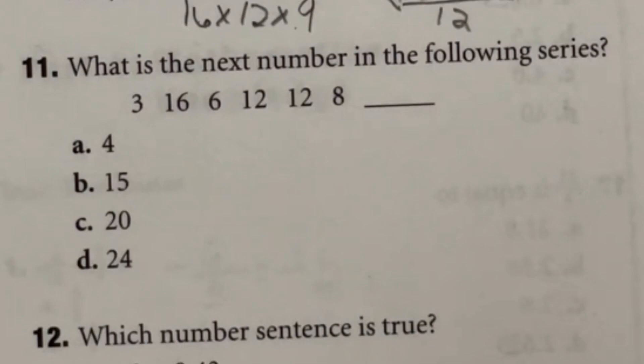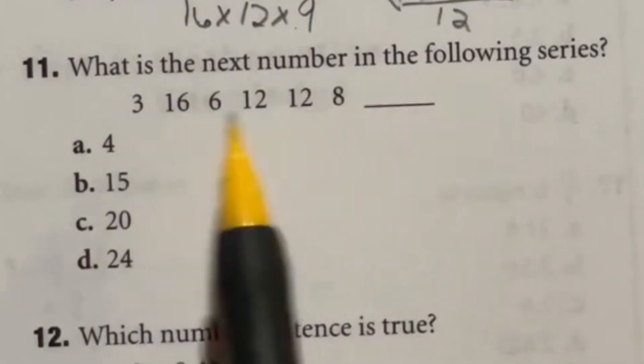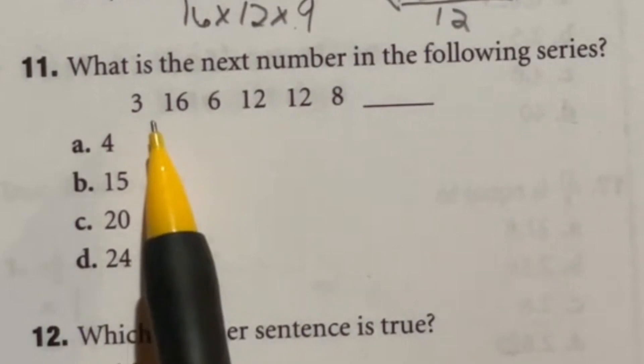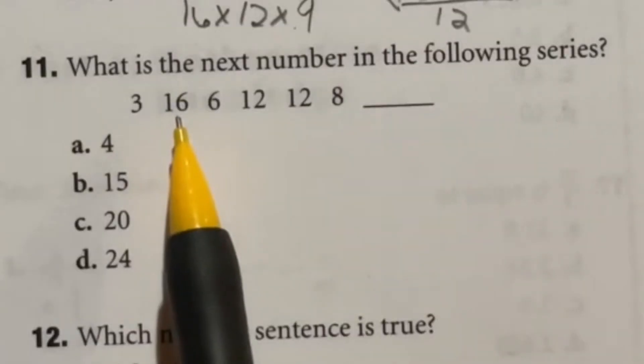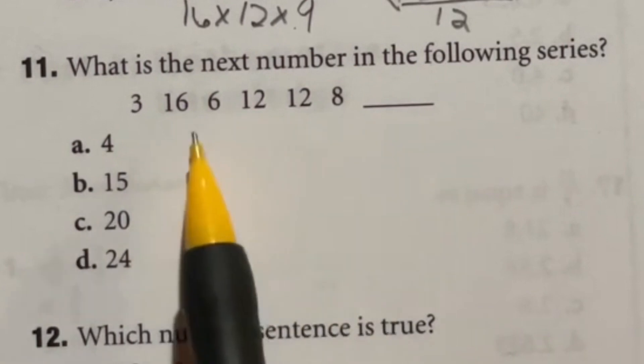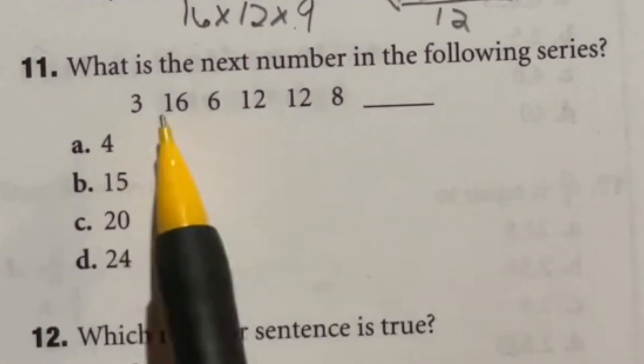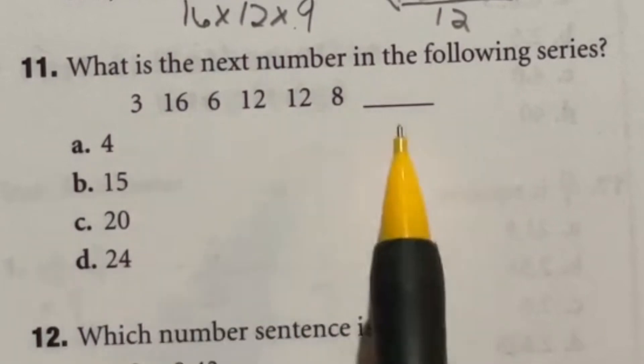So number 11 is super bizarre. They give you this series of numbers here and tell you to find this last one. I'm looking through this thing and you're adding 13 and then subtracting 10 and it's all over the place as to what's going on because it turns out that there's not one continuous series here for all of these.